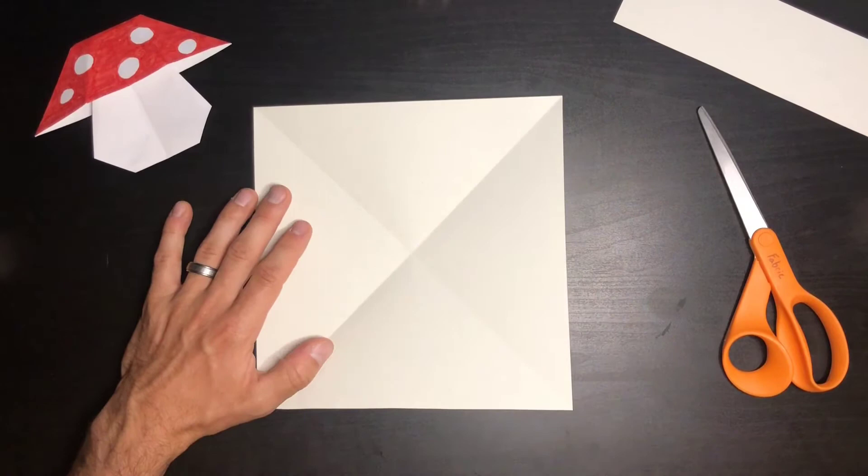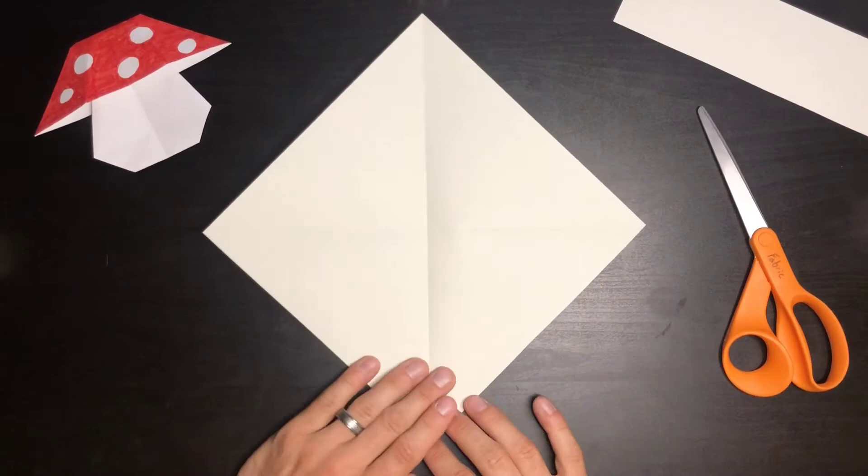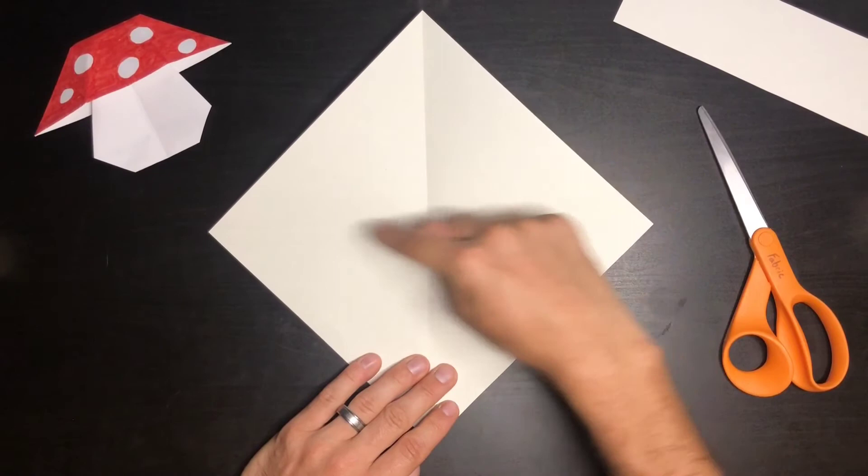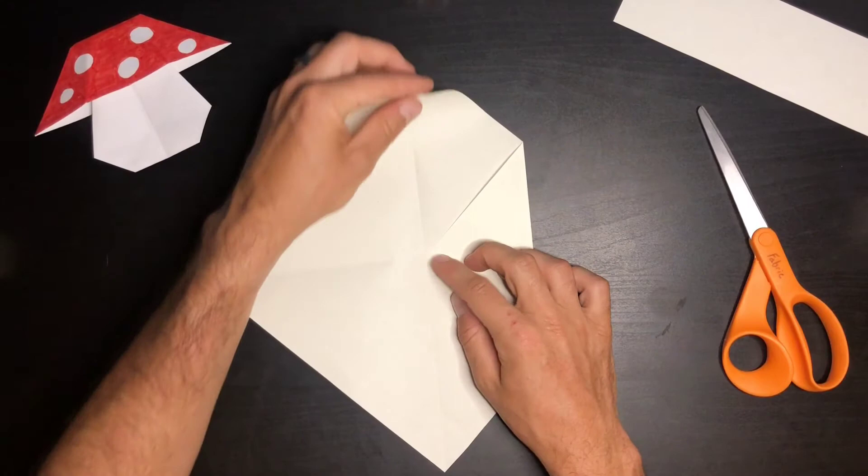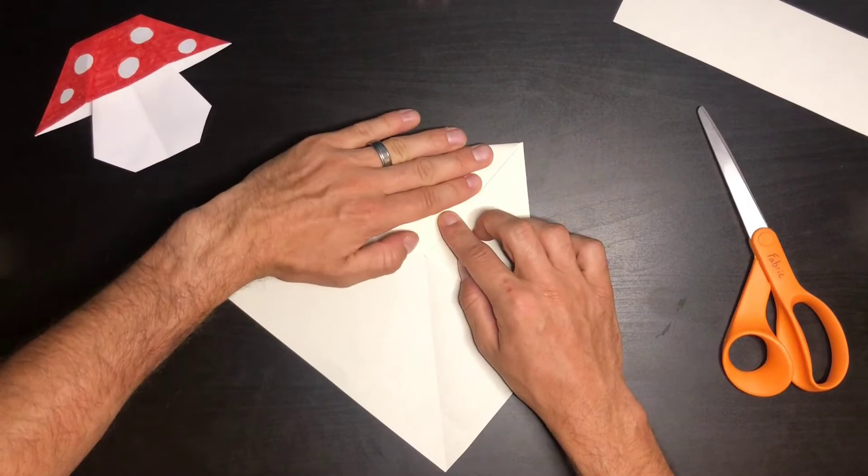And now what we're going to do is turn it like a diamond with three points away from you. We're going to fold them into the center. So you take one, fold it towards the center so at the peak it's in the center. And that means when we do this one, this edge right here should line up pretty close.